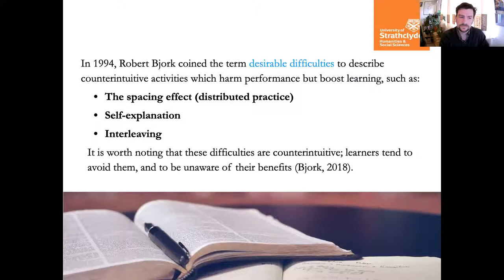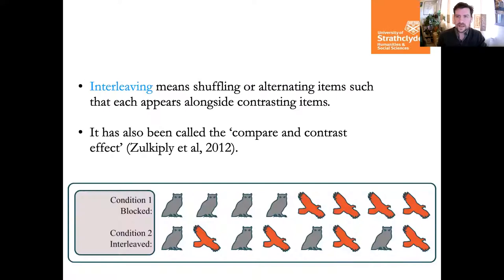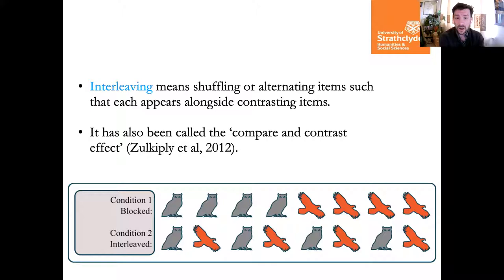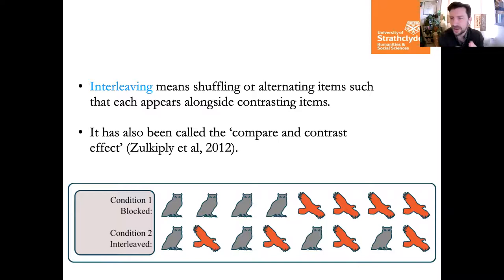Spacing out practice — distributed practice — is one example of a desirable difficulty, as is self-explanation: asking learners to reflect on and explain a concept rather than just telling them about it. Interleaving can be put into that category too. Because these things feel harder, learners quite often avoid them and assume they are unhelpful.